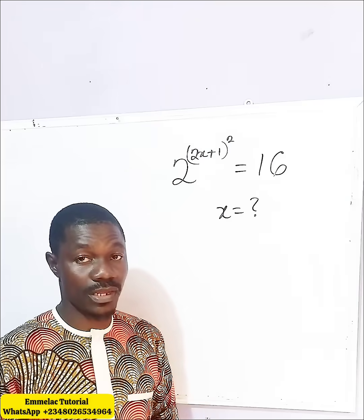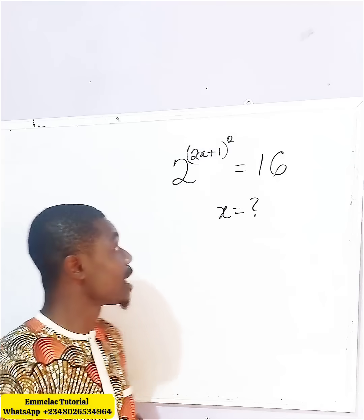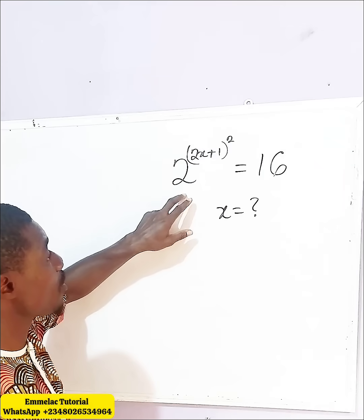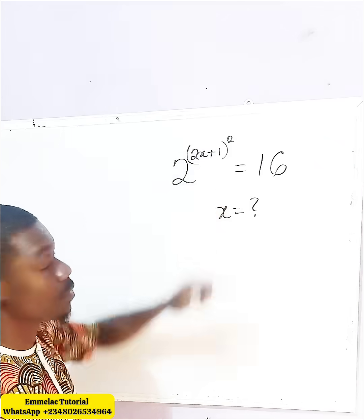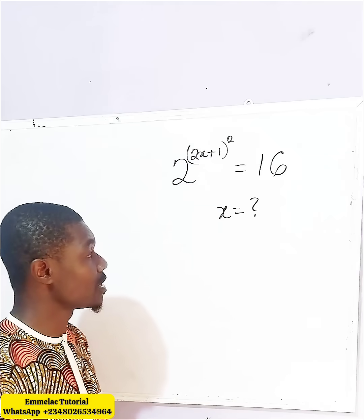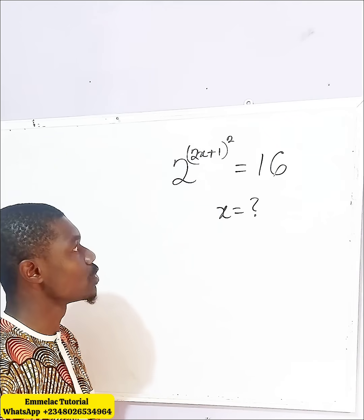Welcome to Milak Online tutorial. Let us look at this exponential equation. Here it says 2 raised to the power of, in bracket, 2x plus 1 raised to the power of 2, equals 16. Now we have to find x.